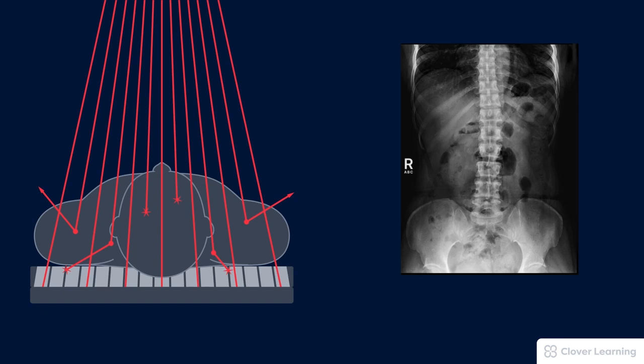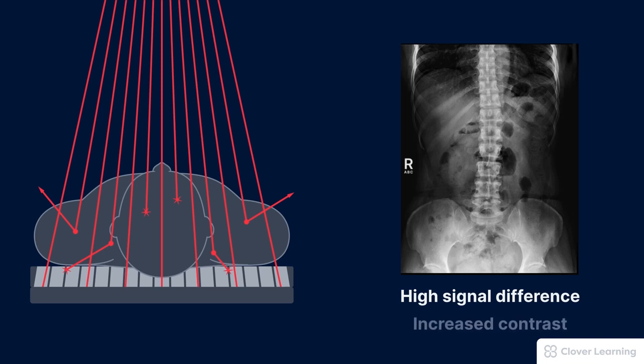A grid is placed between the patient and the image receptor to absorb scatter radiation before it strikes the image receptor. Grids do not decrease the production of scatter within the patient, but they do remove scatter from the beam before it strikes the image receptor. This helps maintain high signal difference in the remnant beam and increases the resulting image contrast. Increasing contrast is the very reason that we use grids.